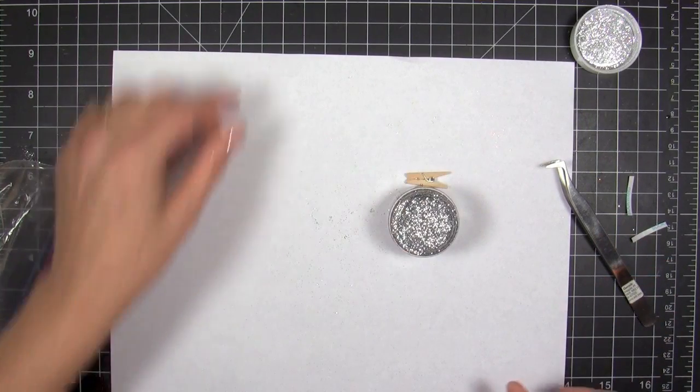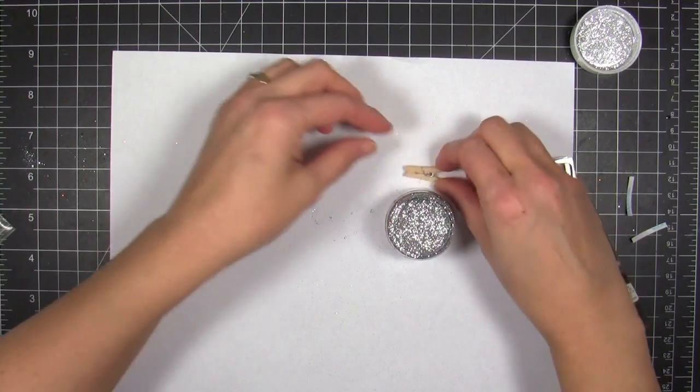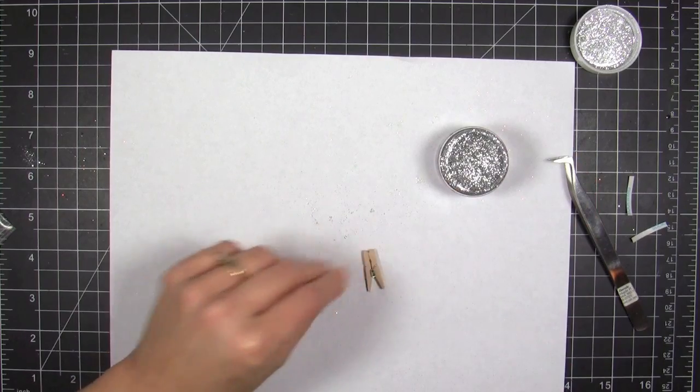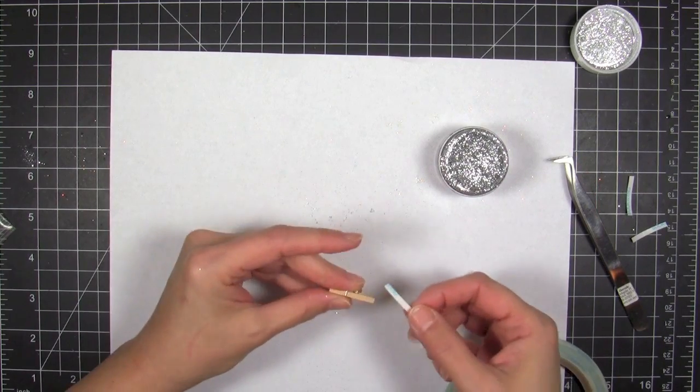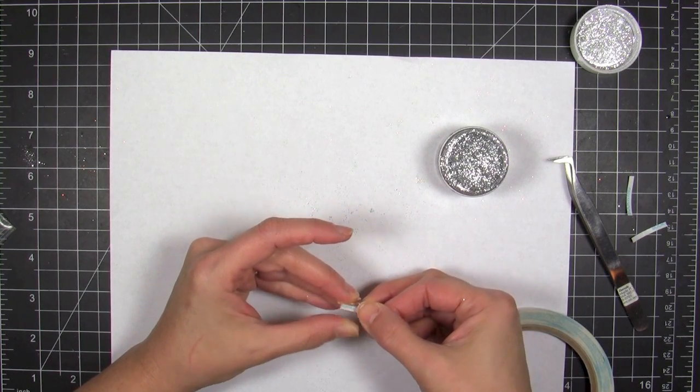I thought it would be really fun to take these little teeny tiny wooden clips. I love these little clothespins by Canvas Corp and I'm just gonna coat them with glitter too.